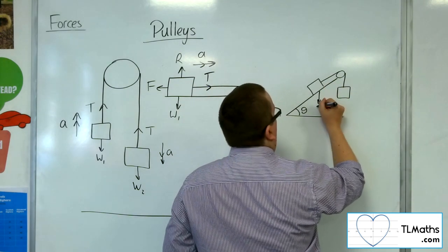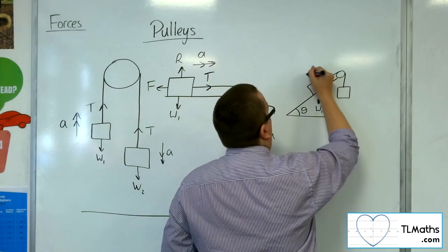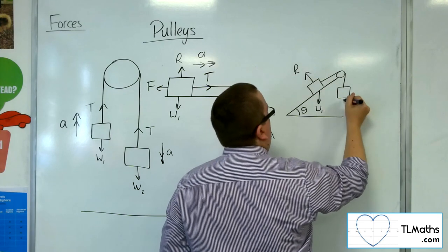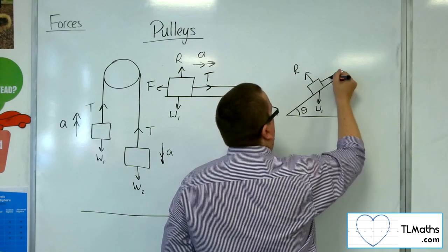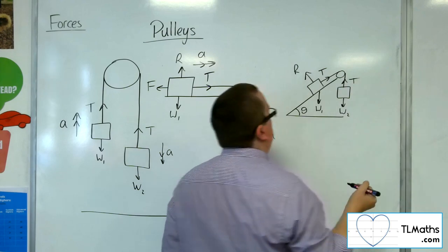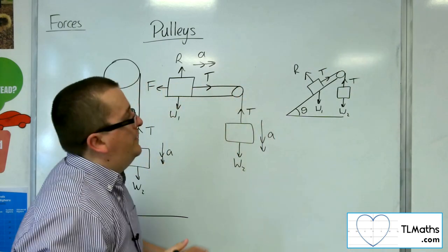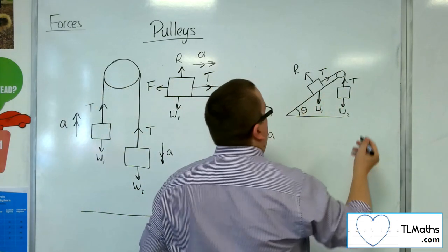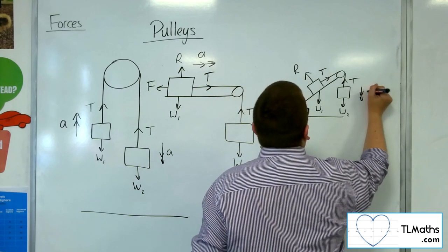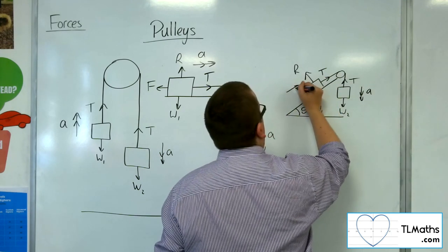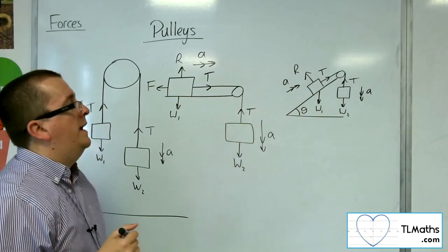So you've got the weight of this particle working downwards, you've got the normal reaction force working that way, the weight of that particle, you've got the tension in the string. If this particle is heavier than this one, then we're going to be accelerating this way, and then up the table. Acceleration A.